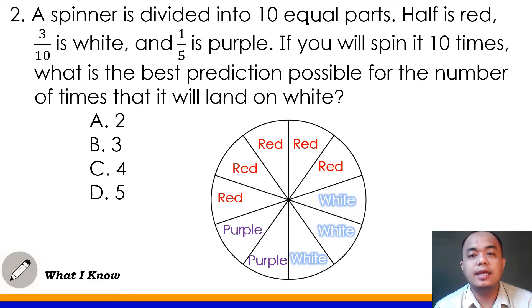Now the question is, if you will spin it 10 times, kung pa-iikutin daw natin class ng sampung beses ang spinner natin, what is the best prediction possible for the number of times that it will land on white? Ano daw ang pwede natin prediction class? Kung ilang beses magla-land ang spinner natin sa white na color? Yes. Since 10 times lang ang required natin sa pag-ikot, probably the best prediction that we will be having is 3 also. Since our spinner here has 3 white parts. So the correct answer for number 2 is letter B.